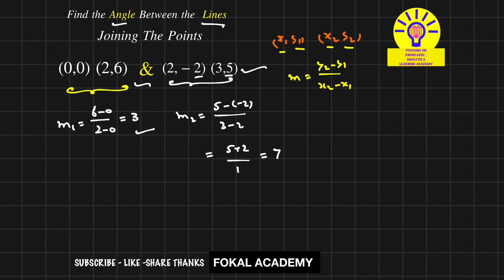We know that the angle between two lines when we have the slopes is tan θ = |m1 - m2|/(1 + m1 × m2).